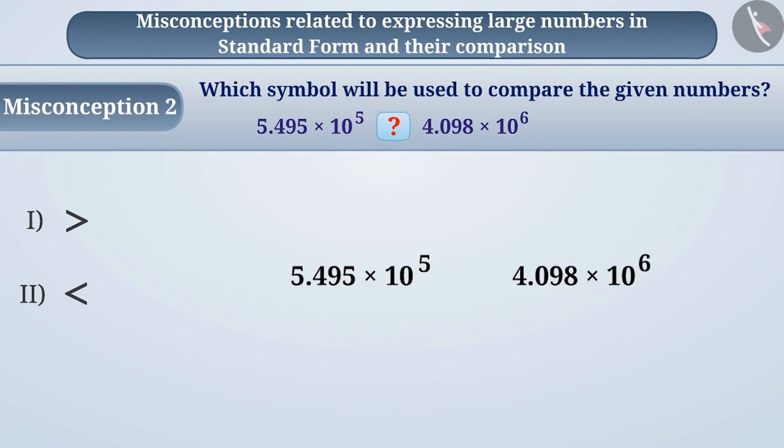Students often make simple mistakes when comparing exponents. For example, some students ignore the power of 10 and only compare the decimal numbers. By comparing decimal numbers, they believe that the first number is greater than the second number, so they select option 1, which is the wrong answer.